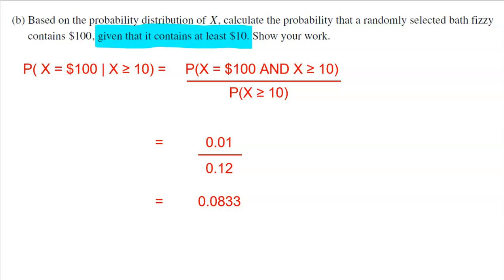But we have a conditional probability here. So we first start off by writing that out. So we're looking at the probability that we have $100 in our bath fizzy on the condition, that's what we see that line there, and the condition is that the amount in the bath fizzy is at least 10, greater than or equal to 10, which is great news because we've already calculated that probability in the previous question. So using your conditional probability formula, in the numerator is both.